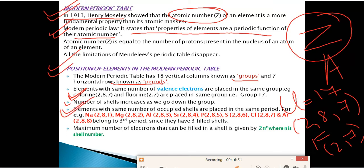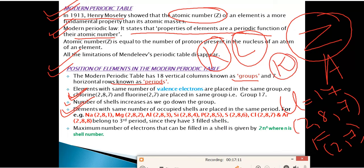Elements with the same number of occupied shells are placed in the same period. If an element has only the K shell (1 shell), it is in Period 1. If it has K and L shells (2 shells), it is in Period 2. Elements like sodium, magnesium, aluminium, silicon, phosphorus, sulfur, chlorine, and argon all have three shells (K, L, M) and are in the third period.